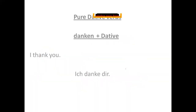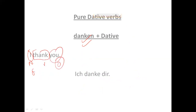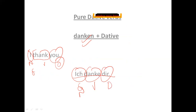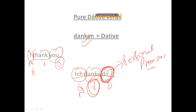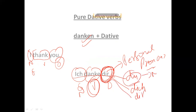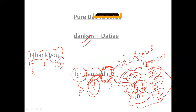Next verb is 'danken,' meaning 'to thank.' For example, 'I thank you': 'ich' is nominative, 'danke' is the verb, and 'dir' is the dative object. Note that 'du' is nominative, 'dich' is accusative, and 'dir' is dative. This distinction will be covered in detail when we discuss personal pronouns.